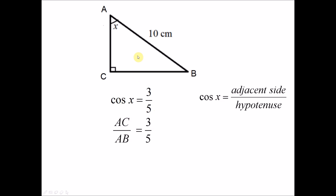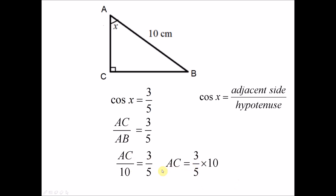Now we look at the triangle again. AB has the value of 10, so we rewrite this as AC over 10 equals 3 over 5. When we move 10 to the right-hand side, we can find AC. AC equals 3 over 5 times 10, and you get 6 cm.